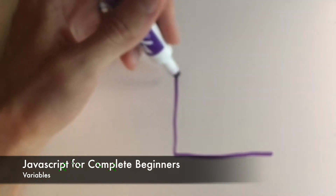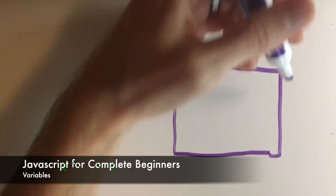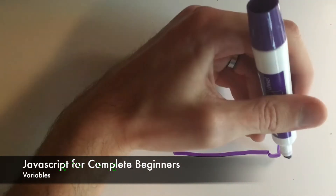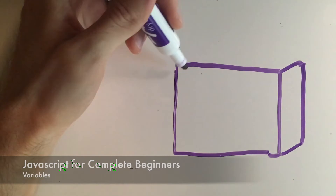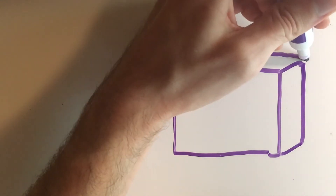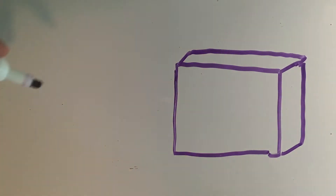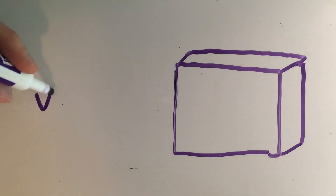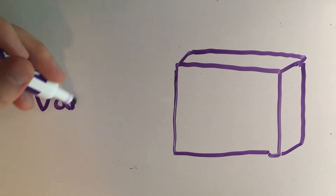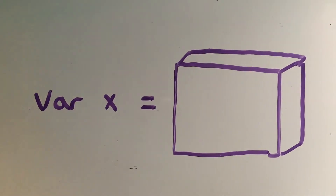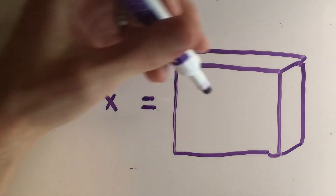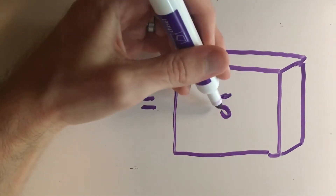In my opinion the best way to learn about variables is to first visualize a variable as an abstract object, such as an empty box or a bucket. For this example let's go ahead and declare a variable denoted as X. Now that I have my variable X I can go ahead and assign it an integer 5.